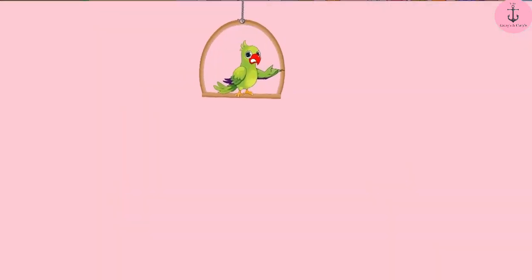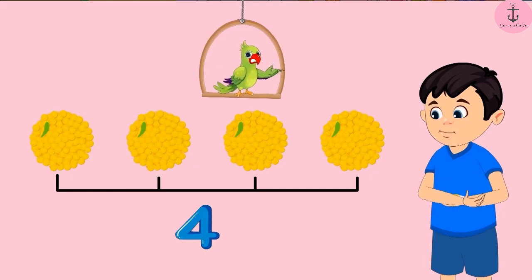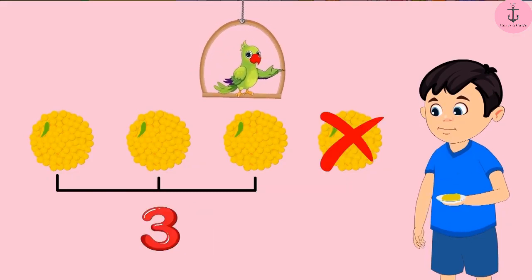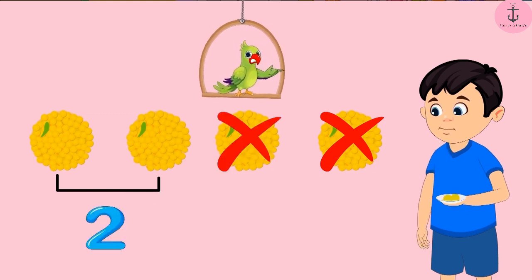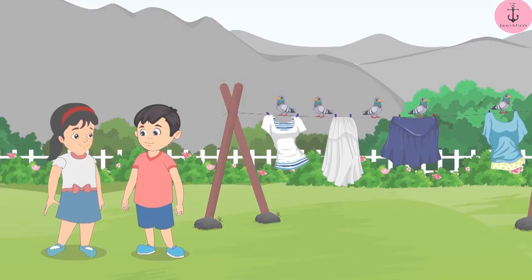So, children, first Chotu had four laddus with him. Then he ate one, so there were three left. But then out of the three laddus, he ate one more laddu. So then there were just two laddus left with him. In this way, the number of laddus kept decreasing.